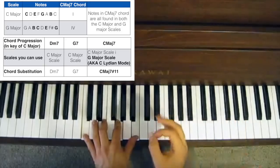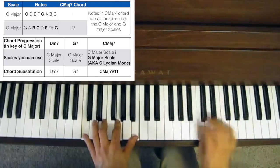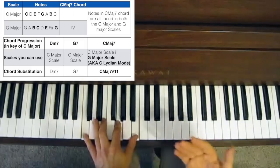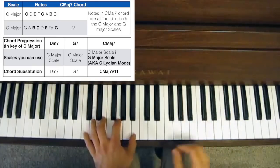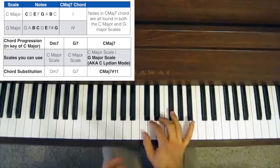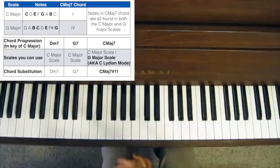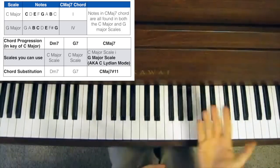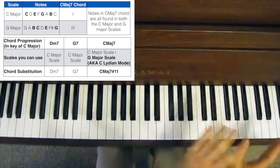In jazz, you don't have to necessarily stick to the key the chord progression is in. It'll still sound good if you play G major over that one chord, because that chord can be derived from G major. And incidentally, playing the G major scale over a C major 7 chord means you're technically playing the C Lydian mode, which is the mode that was used a lot during the bebop era to avoid the avoid notes.